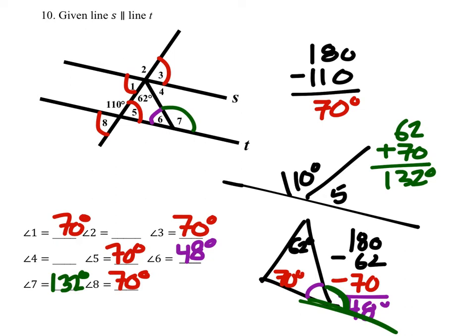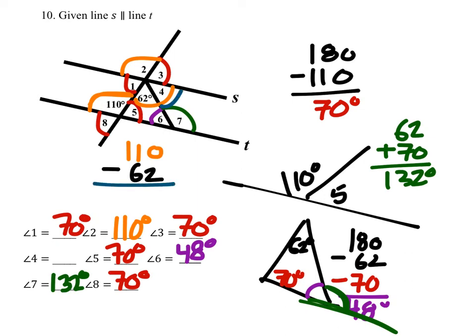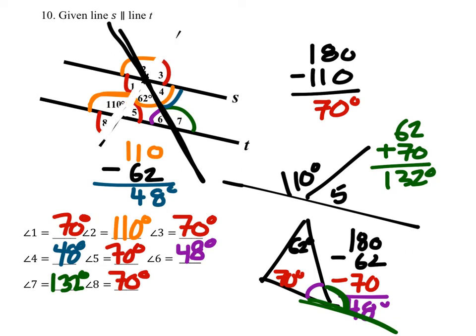Alternate exterior angles 3 and 8 should be congruent as well, so angle 3 is 70 degrees also — no calculating involved there. Angle 2 is corresponding with the 110-degree angle, so we know that one is 110 degrees. Now all we need is angle 4: this whole section would be 110, but we've got the 62 degrees, so I subtract that from the 110. That gives me angle 4 — 48 degrees. Another way to see it: angle 4 is alternate interior with angle 6, which is why they have the same measure.